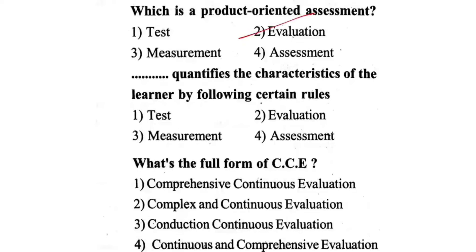Second one, evaluation. Next question: Dash quantifies the characteristics of the learner by following certain rules. First one, test. Second one, evaluation. Third one, measurement. Fourth one, assessment. The correct answer is third one — measurement.